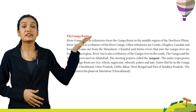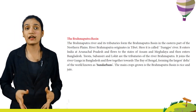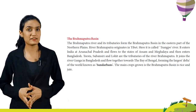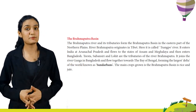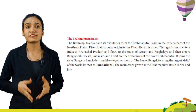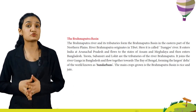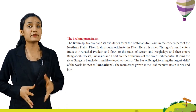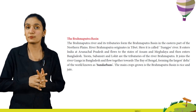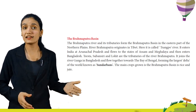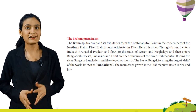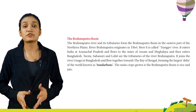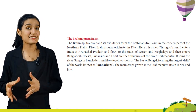The Brahmaputra river and its tributaries form the Brahmaputra basin in the eastern part of the Northern Plains. River Brahmaputra originates in Tibet where it is called the Tsangpo river. It enters India at Arunachal Pradesh and flows through Assam and then enters Bangladesh. Tista, Subansiri and Lohit are tributaries of the river Brahmaputra. It joins the river Ganga in Bangladesh and flows together towards the Bay of Bengal, forming the largest delta of the world known as the Sundarbans. The main crops grown in the Brahmaputra basin are rice and jute.